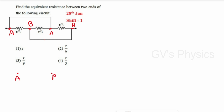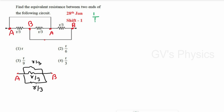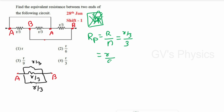With junctions A and B identified, we redraw the diagram. Across A to B there is R/3, across B to A again R/3, and once more R/3 — all three resistances are identical and connected in parallel. Using Rp = R/N (for identical resistors), Rp = (R/3) / 3 = R/9. So the effective resistance is R/9, which is option 3.